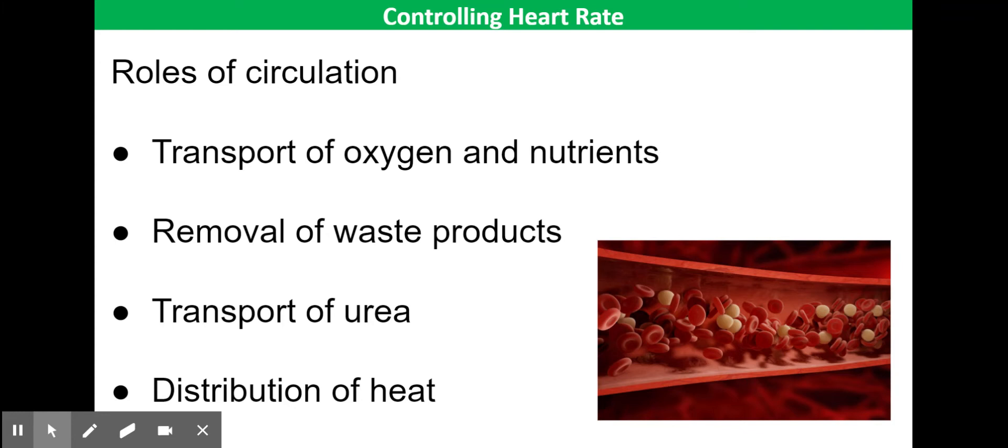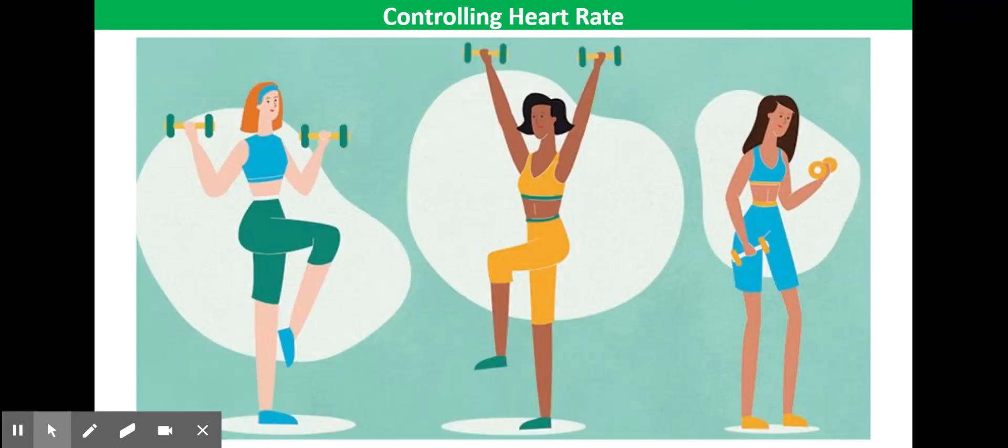Now the requirements of the cells and tissues is going to vary according to their level of activity. When you are being physically active, your muscle cells are going to need more oxygen and glucose so that they can respire more. Your heart muscle cells will also need more oxygen and fatty acids, and all the muscles will need to remove carbon dioxide and heat. It's essential that the circulatory system can adapt to meet the needs of the tissues, and part of this adaptation is controlling the activity of the heart.